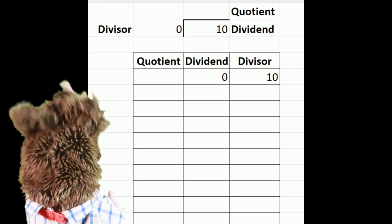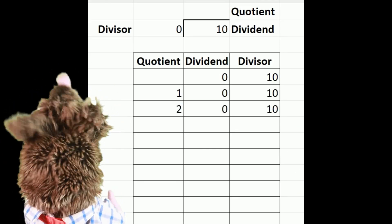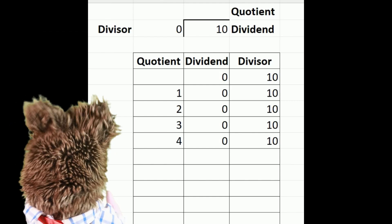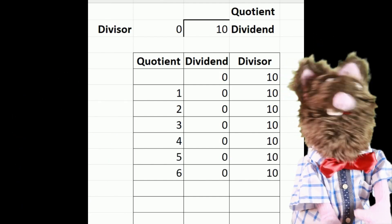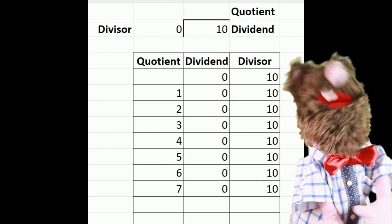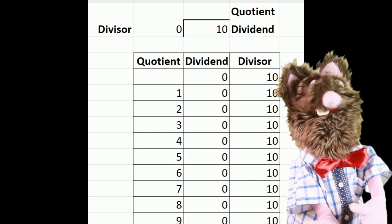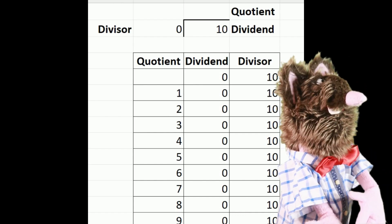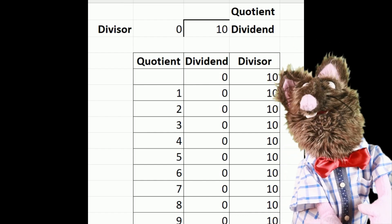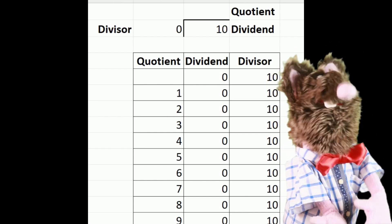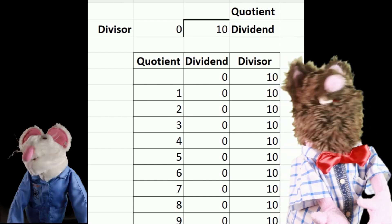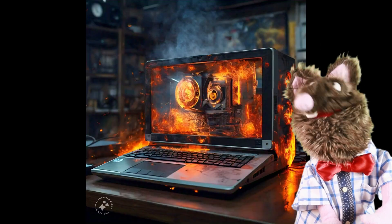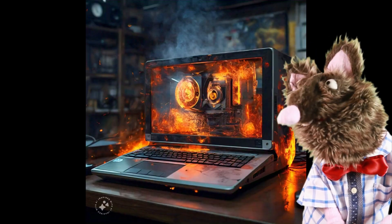We actually programmed Excel to do this adding machine simulation. You could write a program to simulate an old adding machine. You probably want to put in a version of the stop button like we did, just in case things go horribly wrong.